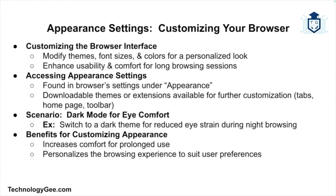Finally, let's cover appearance settings. Most browsers allow users to customize the look and feel of the browser interface, such as changing themes, font sizes, and colors. You can usually find these options in browser settings under appearance. Some browsers offer downloadable themes or extensions that can change the look of tabs, the homepage, and the toolbar. For example, if you prefer a dark theme to reduce eye strain when browsing at night, switching to dark mode can make the browser more comfortable to use. Customizing the appearance makes the browser easier to use for long periods and allows for personalization.